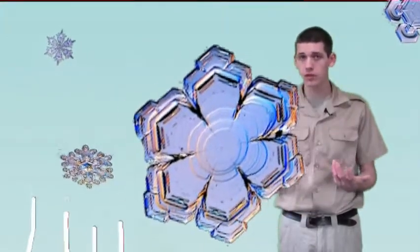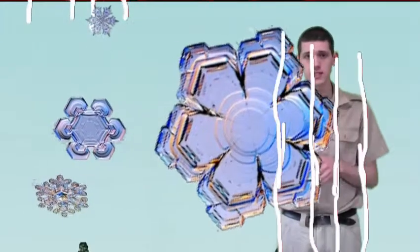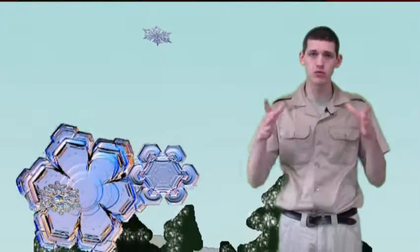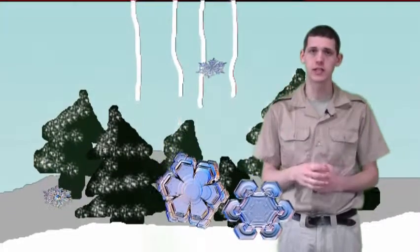It could also join up with another snowflake, and have two of them combined, and make it double the size. Sometimes an entire snowstorm will be made up of just really big snowflakes that are comprised of many smaller snowflakes that are all clinked together.